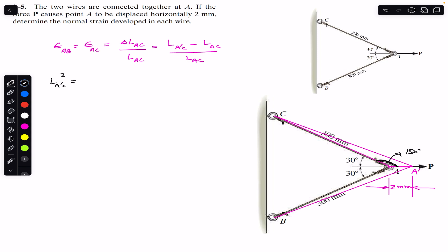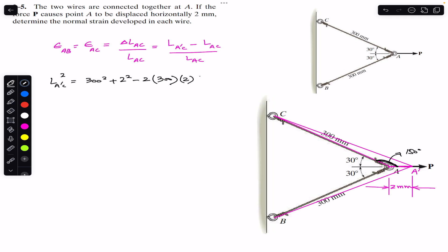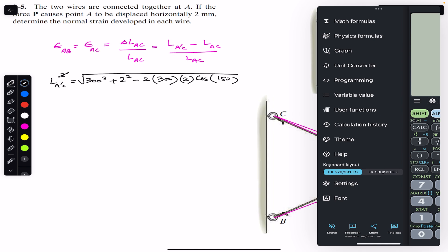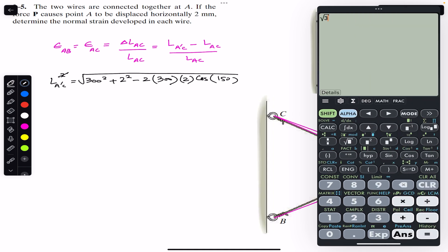We can find L_A'C using the law of cosines. L_A'C squared equals AC squared plus the displacement squared minus 2 times AC times the displacement times cosine of the angle opposite to A'C. AC is 300 mm and the displacement is 2 mm, so we get: 300 squared plus 2 squared minus 2 times 300 times 2 times cos(150).